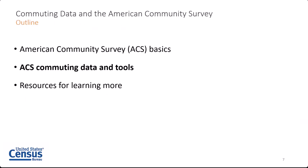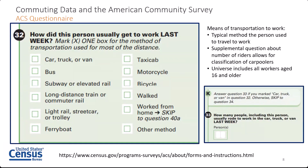Now that we have the basics of the ACS covered, let's hop into the commuting data. Commuting questions first showed up on census surveys all the way back in 1960 as part of the decennial census long form, which meant that just a sample of the population were asked one or more questions related to commuting. Back in 1960, the question was limited to the means of transportation to work. Besides changes to a couple of categories, that question has remained largely the same since that time, although it is worth noting that in 1960, it was assumed that whoever was going to work was a he. By 2000, the question set had expanded to be more or less the same as what we see today on the ACS, and after 2000, this question disappeared from the decennial census and it's only on the American Community Survey.